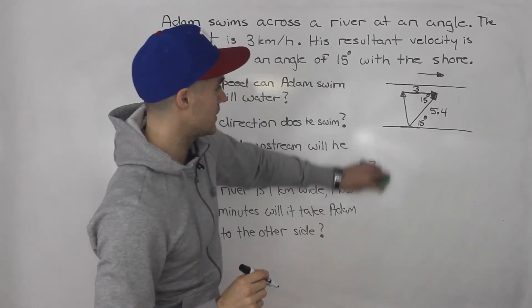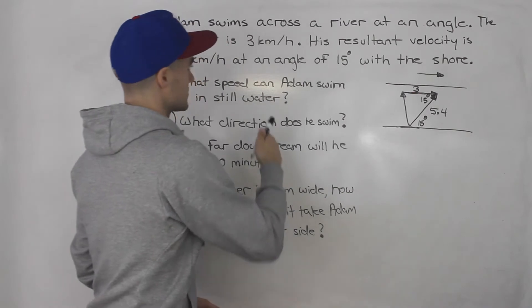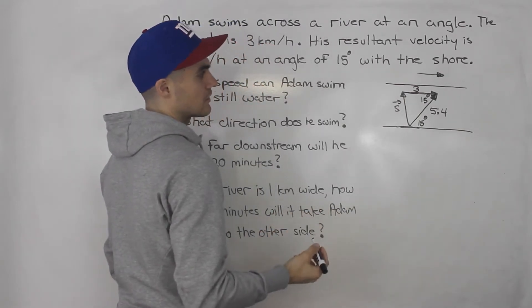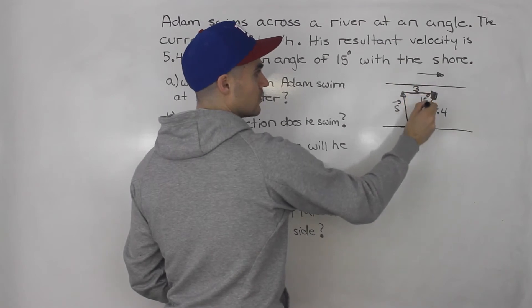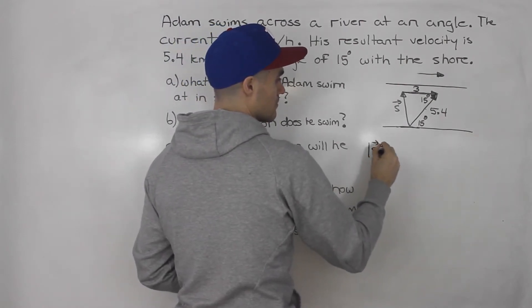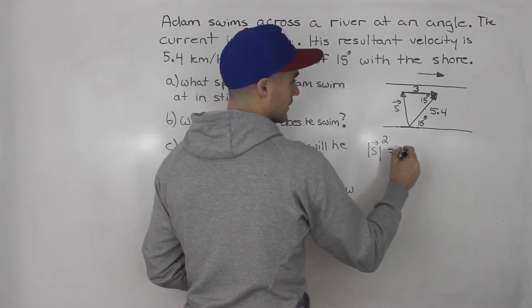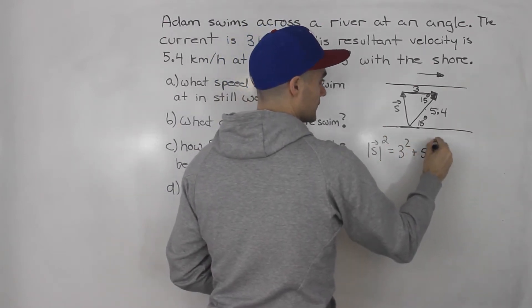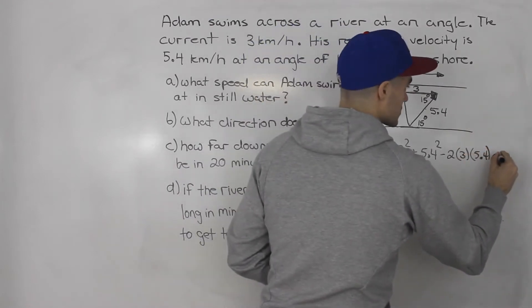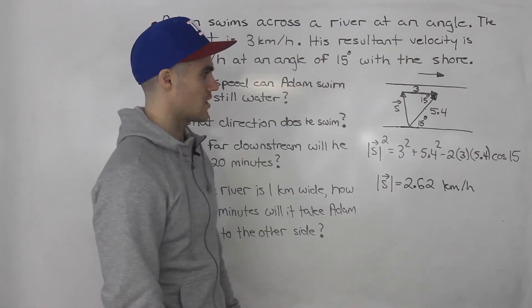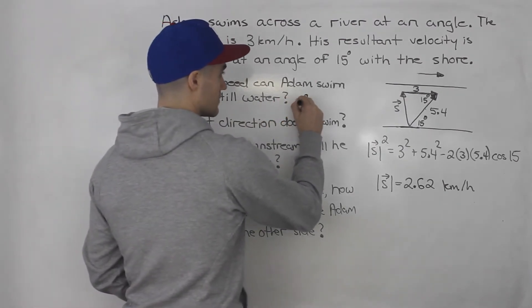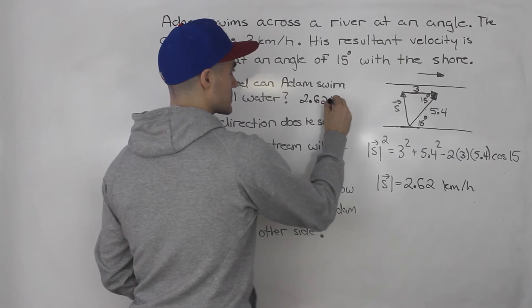Now we can solve for Adam's swim speed — the magnitude of vector S. We use cosine law because we have two sides of a triangle and the contained angle. So the magnitude of S squared equals 3 squared plus 5.4 squared minus 2 times 3 times 5.4 times cos of 15. When you solve that, you end up getting 2.62 kilometers per hour. That is the answer to part A: 2.62 kilometers per hour.